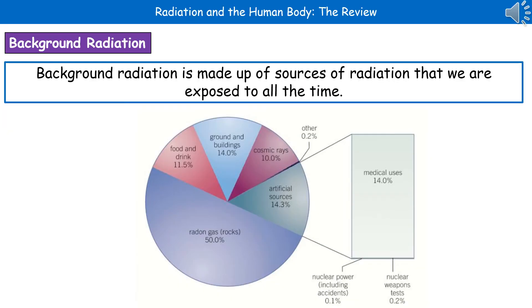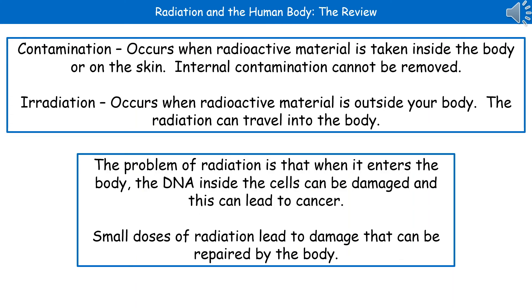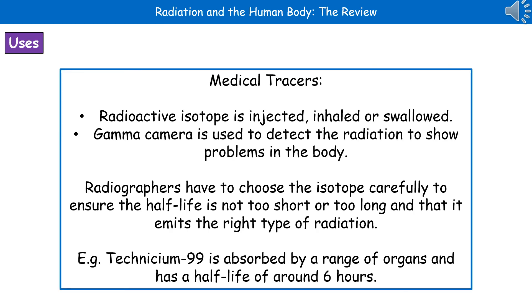The first part of today's physics prep is looking at radiation in the human body. We're all exposed to radiation all the time, which is the background radiation. In the pie chart there we can see the different types: radon at 50%, food and drink, ground and buildings, cosmic rays, artificial sources, medical uses, and other. We need to know two key words: contamination occurs when radioactive material is taken inside the body or on the skin, and internal contamination can't be removed. Irradiation occurs when radioactive material is outside your body and the radiation can then travel into your body. The big problem is that when radiation enters the body, the DNA inside our cells can be damaged and that can lead to cancer, though very small doses can usually be repaired by the body.